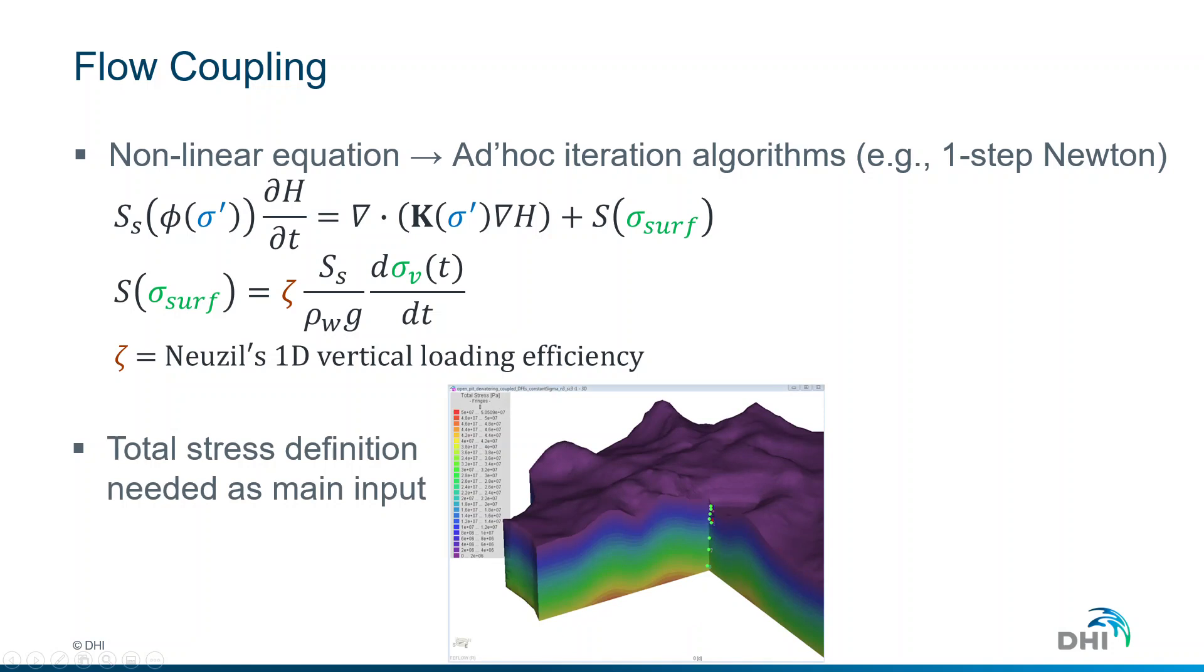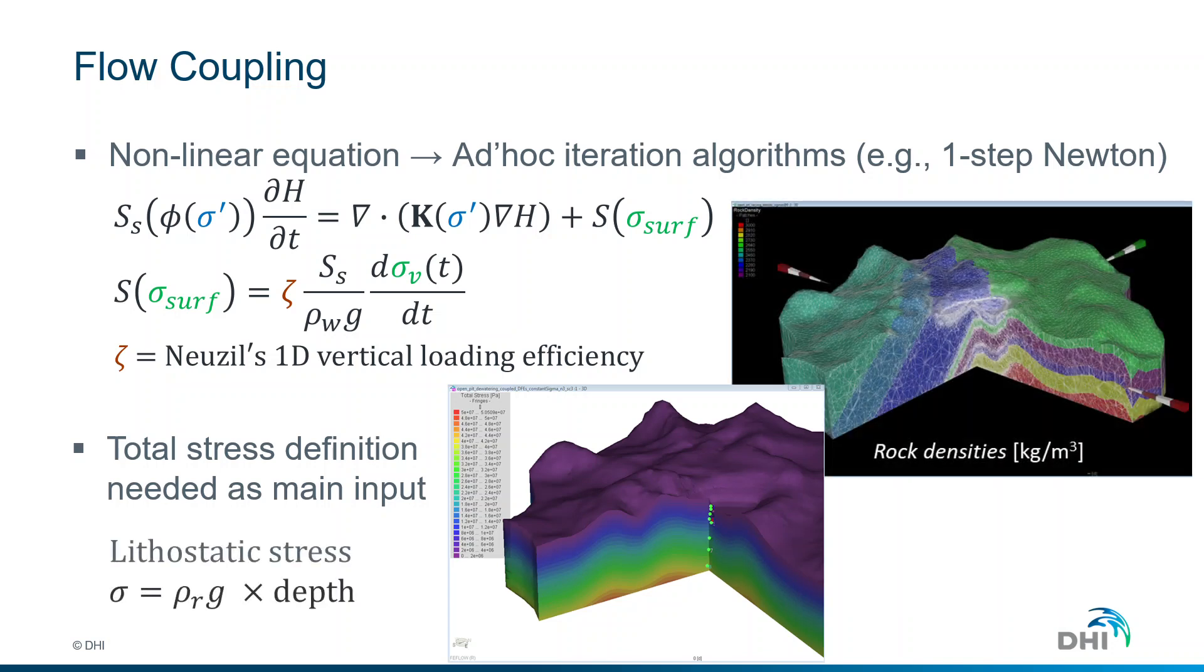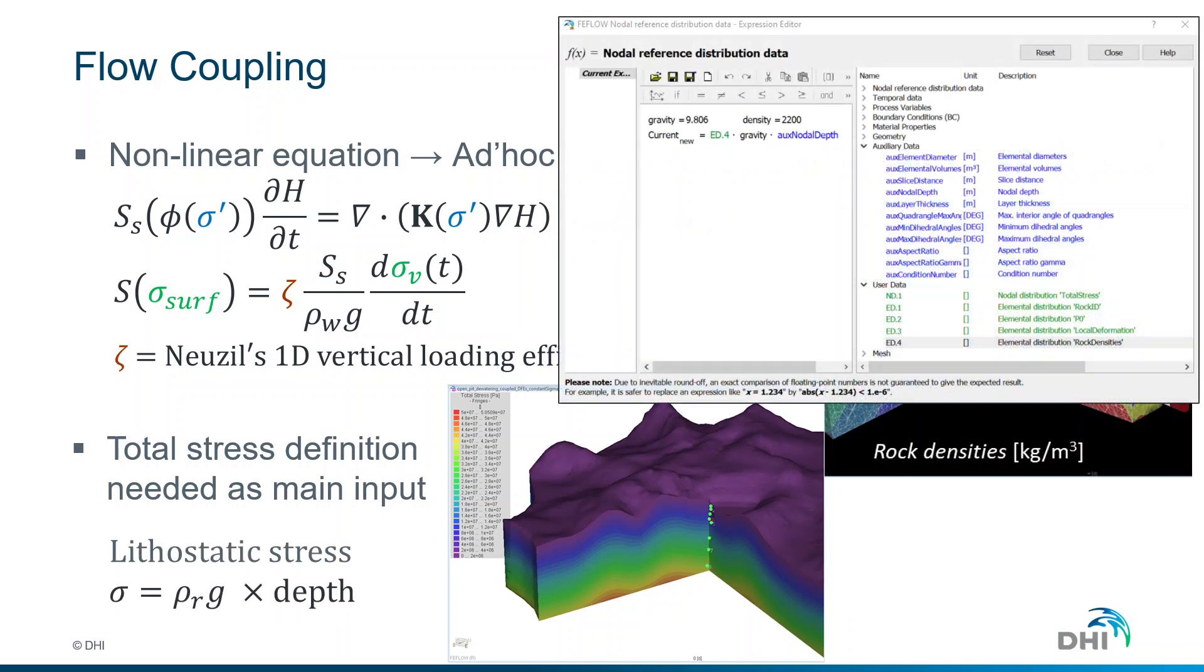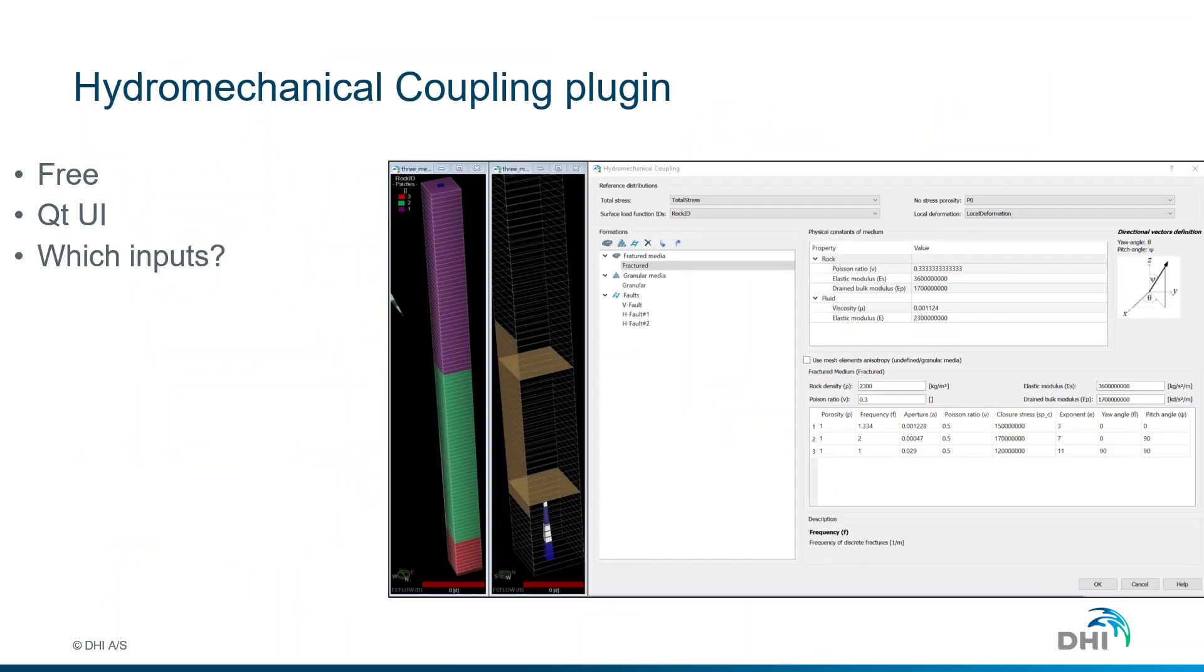The plugin requires some initial inputs. The main input is the total stress definition, which is very easily estimated depending on the rock densities. You have the help of the FEFLOW expression editor to easily calculate the total stresses as a function of the nodal depth and rock density. This rock density obviously can vary in space if you like.